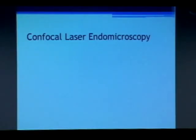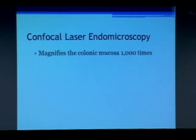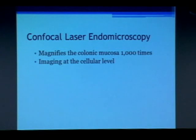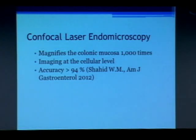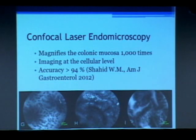We do not have confocal laser endomicroscopy available here, but it is a very neat advancement. It magnifies the colonic mucosa a thousand times — normal colonoscopy is about 20 times — so you are actually looking at the cells like using a microscope. It has very high accuracy for predicting if a polyp or area is normal or abnormal. Normal colon mucosa looks nice and regular; an adenoma starts to look thick and irregular; and cancer looks quite abnormal.